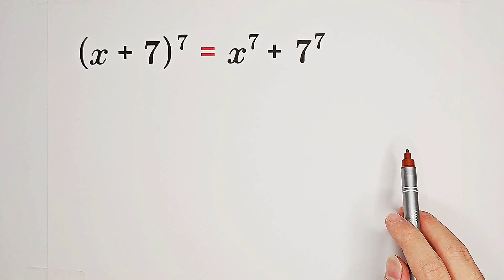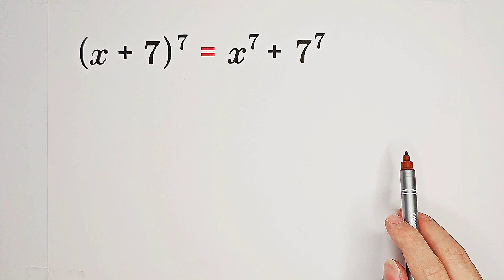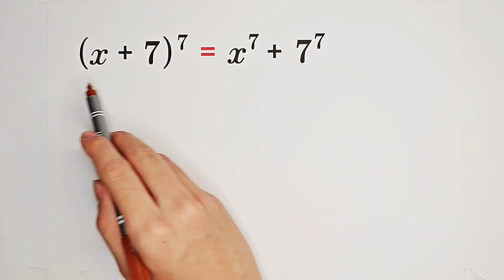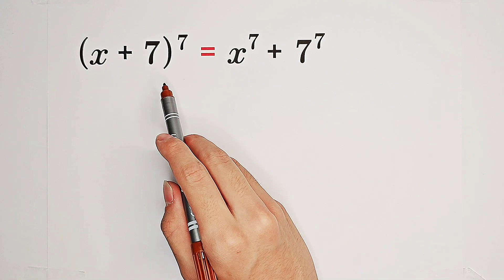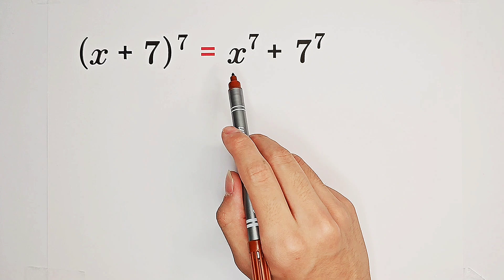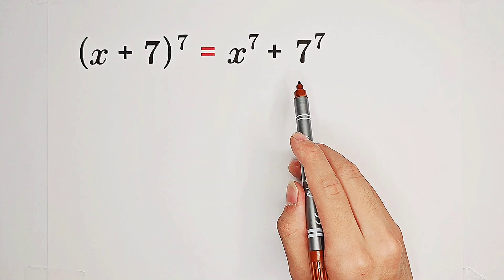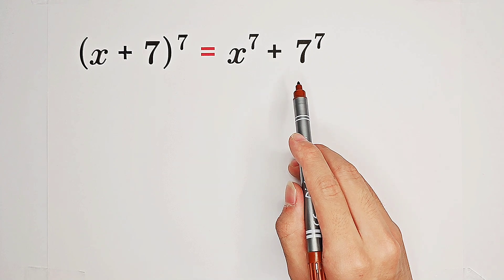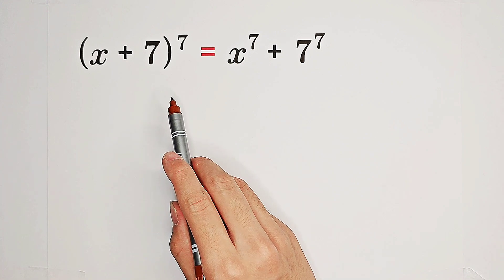What shall we do firstly? The only way is to expand the left-hand side. Why? Because you'll find out that x to the power of 7 and 7 to the power of 7 are the first term and the last term of the expansion of our left-hand side.